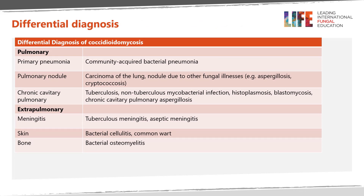The differential diagnosis of coccidioidomycosis is broad. Pulmonary pneumonia may be confused with a bacterial process. A pulmonary nodule may be confused with carcinoma of the lung or other fungal illnesses such as aspergillosis or cryptococcosis. Chronic cavitary coccidioidomycosis may look like tuberculosis, non-tuberculous mycobacterial infection, histoplasmosis, blastomycosis, or chronic cavitary pulmonary aspergillosis. Meningitis due to coccidioidomycosis may be confused with tuberculous meningitis or aseptic meningitis. The skin may appear as a common wart or bacterial cellulitis, and bone involvement may appear to be a bacterial osteomyelitis.